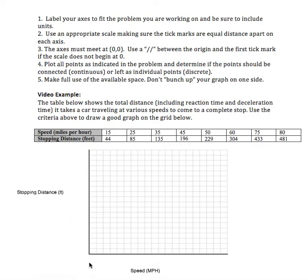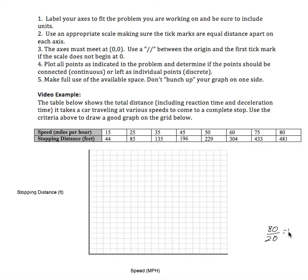The next thing we want to do is understand how we need to label our tick marks on the horizontal axis and on the vertical axis. The speed varies from zero miles per hour up to 80. If I count each of the marks on the graph, I have 20. So I'm going to take 80 divided by 20, which gives me tick marks of distance 4. So I'll put those onto the graph: 4, 8, 12, 16, 20, and so on.